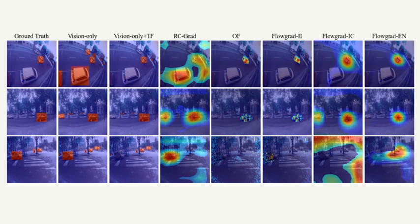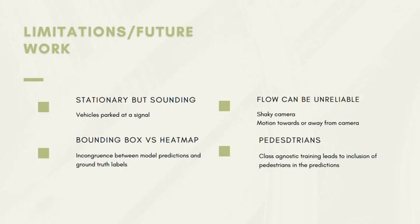But if the optical flow calculation isn't so great, like in the second row, we see that the heuristic suffers and under-predicts. Here, FlowGRAD with the optical flow encoder learns to ignore the stationary vehicle while predicting a precise mask over the sounding car. Now, if the optical flow calculation gets any worse, that doesn't work out very well for our models. In the last row, there's a car parked at a signal with the engine on, and this violates the assumption that sounding objects are also moving objects. Here, all the optical flow-based methods fail pretty dramatically, which brings us to the limitations of our methods. Our methods heavily rely on optical flow, so if things are stationary but sounding, or if there's a shaky camera, or if things are moving directly towards or directly away from the camera, optical flow no longer serves as a useful feature and actually even degrades performance.